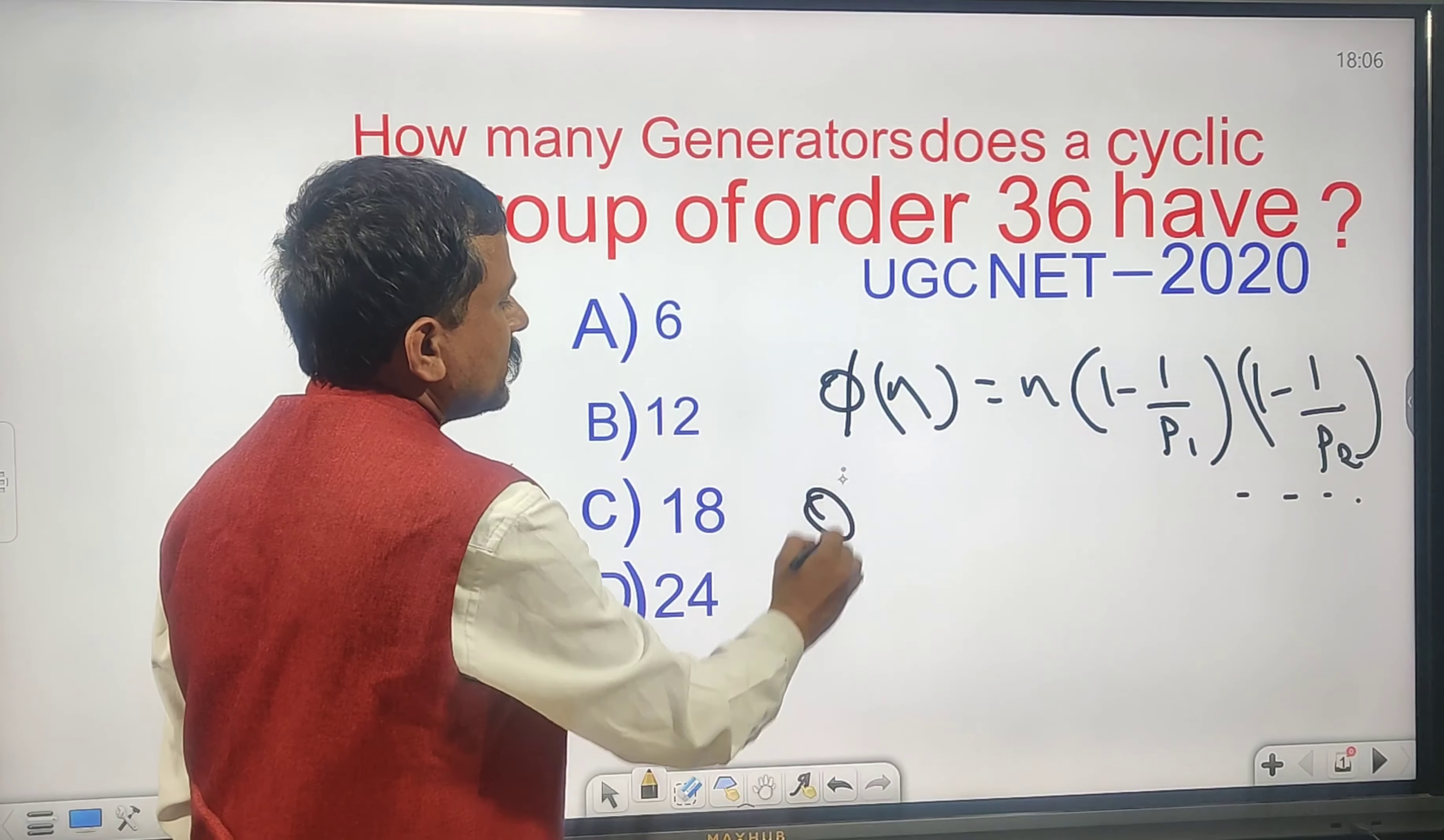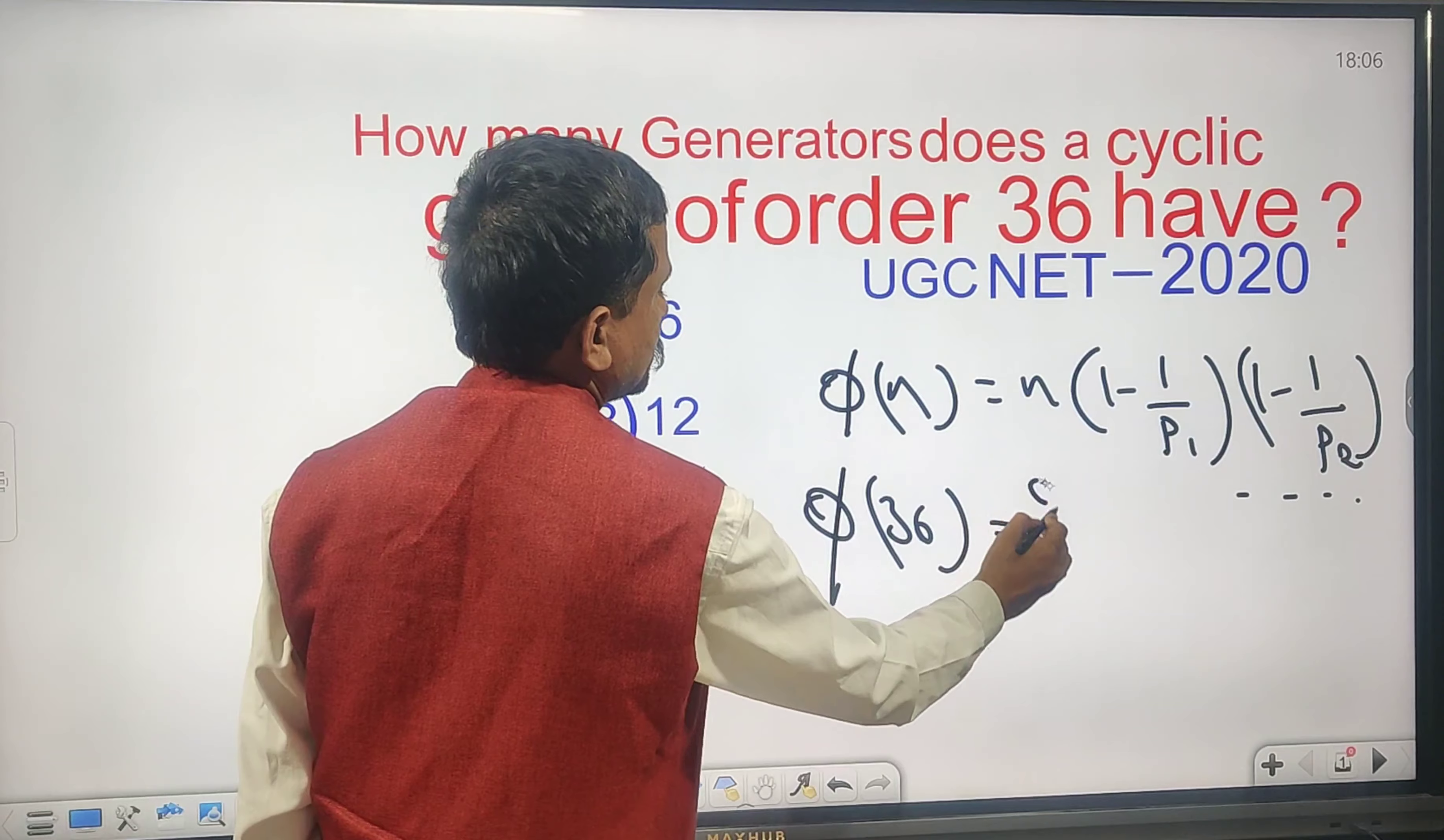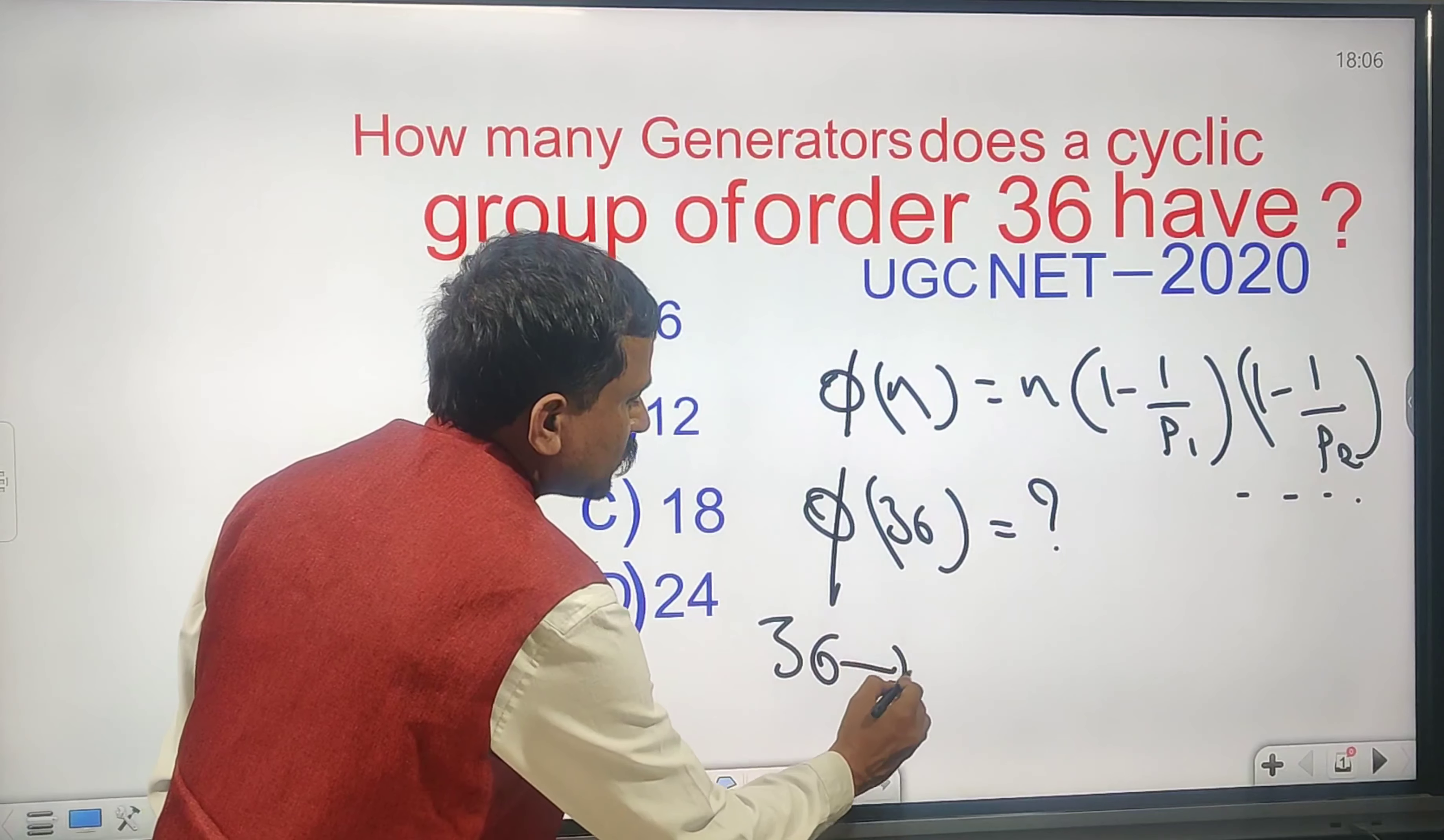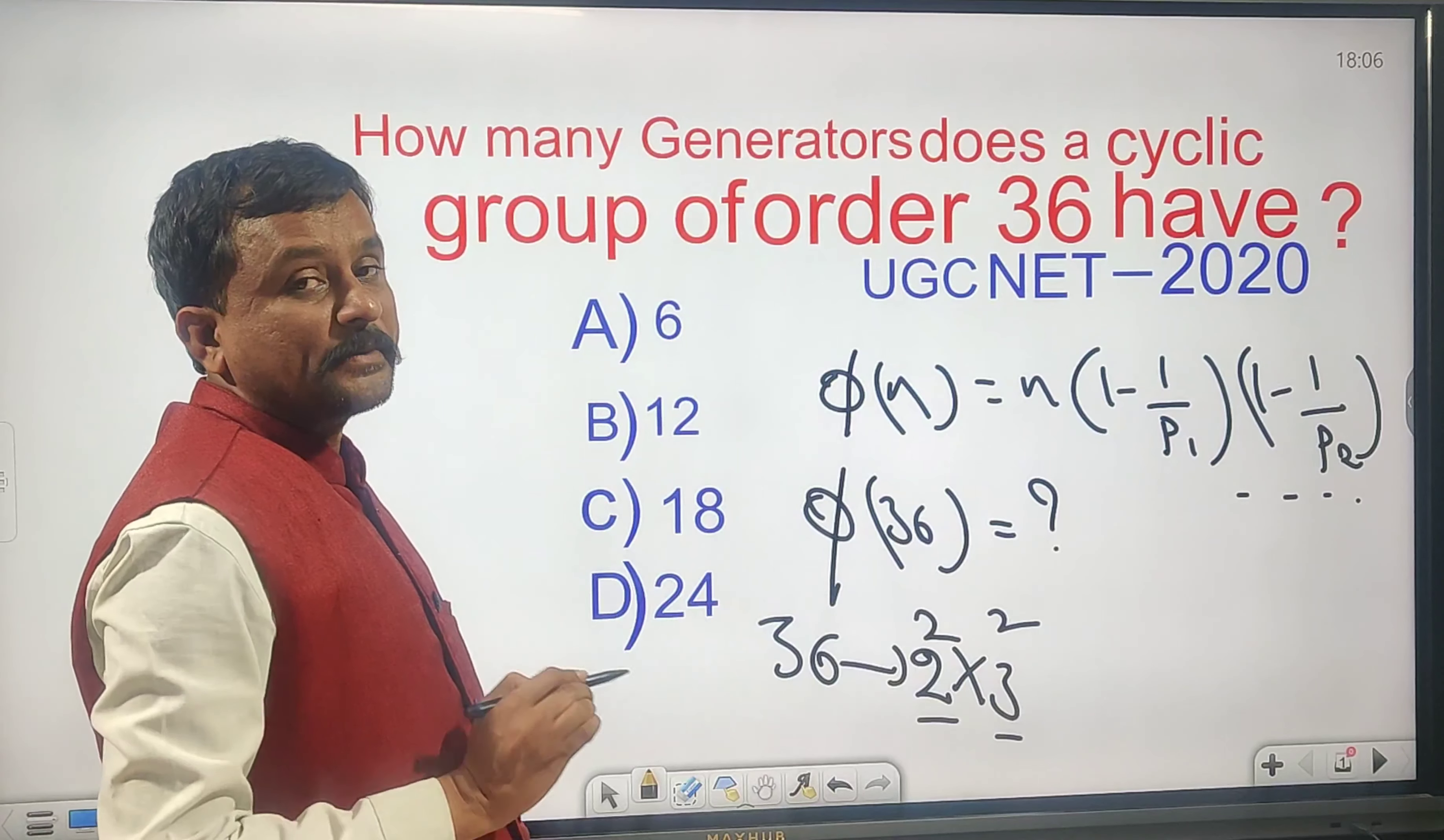So φ(36) equals what? 36 can be written as 2 squared times 3 squared. Very clearly, 2 and 3 are prime numbers, both are prime numbers.